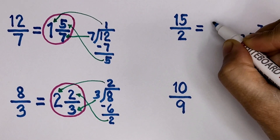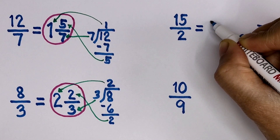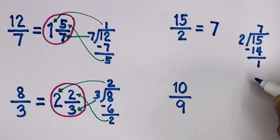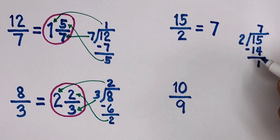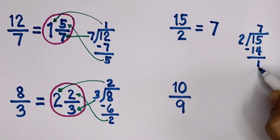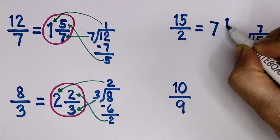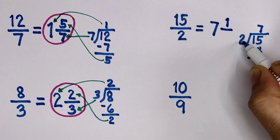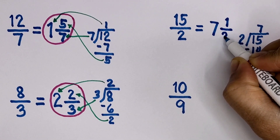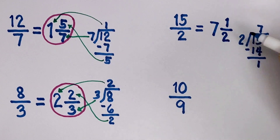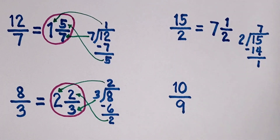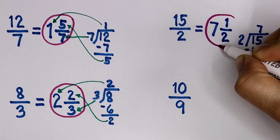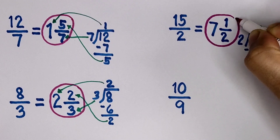Let's write this as a mixed fraction. The quotient is the whole number, the remainder is the numerator, and the divisor is the denominator. 15 halves is 7 and 1 half as a mixed fraction.